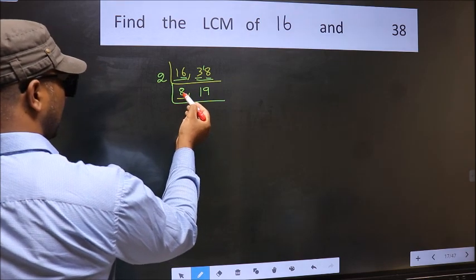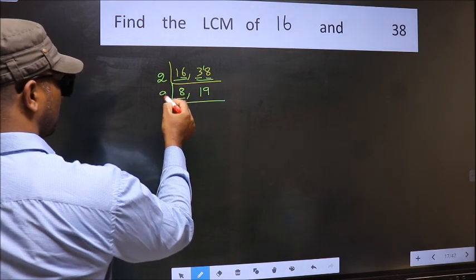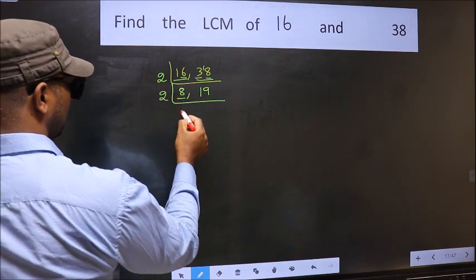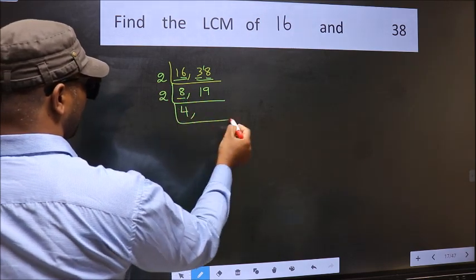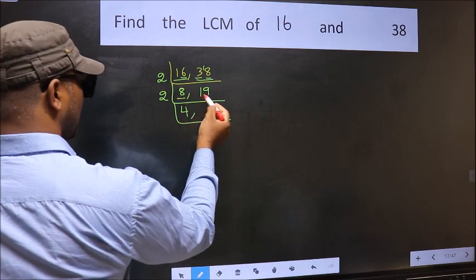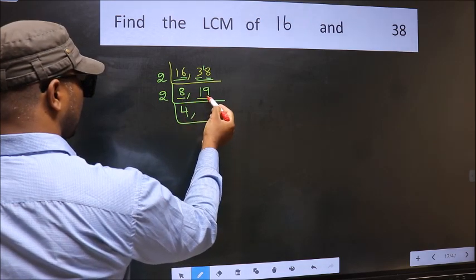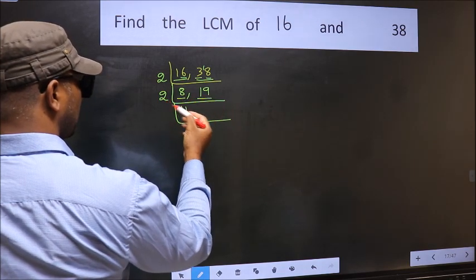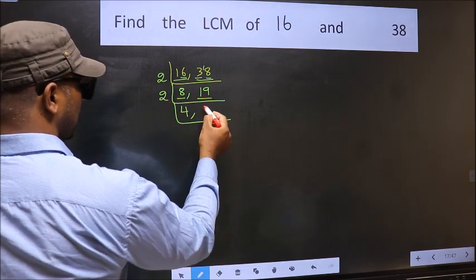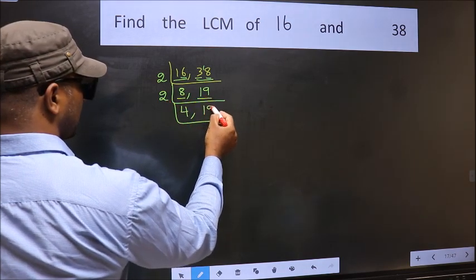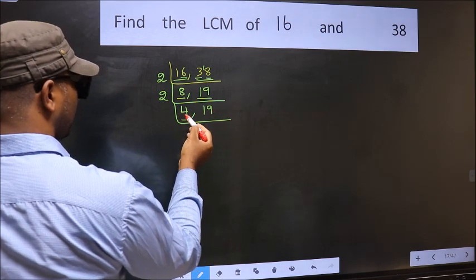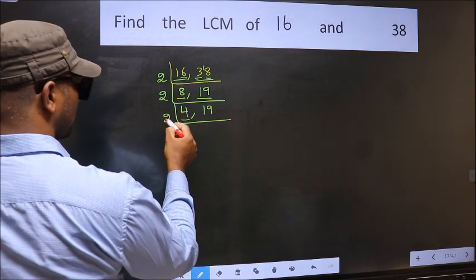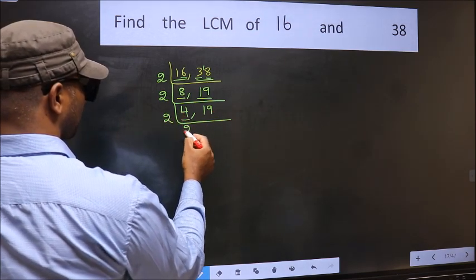Here we have 8. 8 divided by 2 is 4 — because 2 times 4 is 8. The other number 19 is not divisible by 2, so we write it down as it is. Now here we have 4; 4 divided by 2 is 2 — because 2 times 2 is 4.